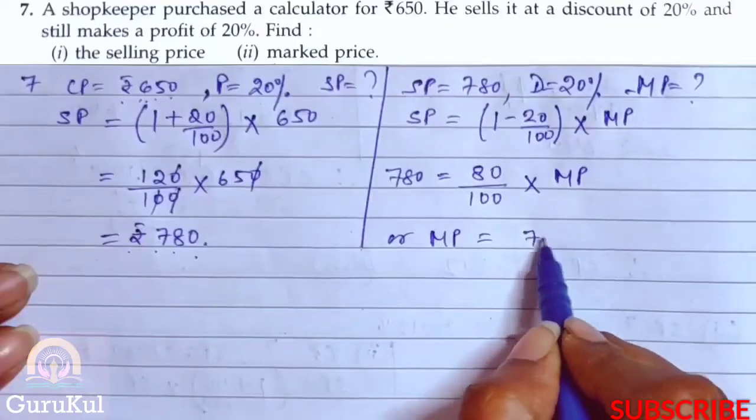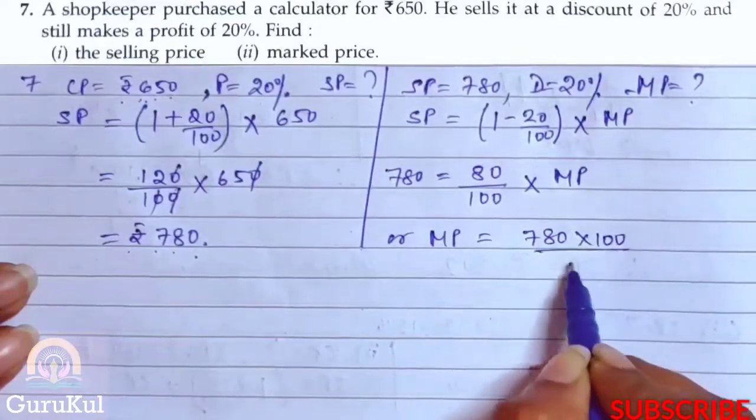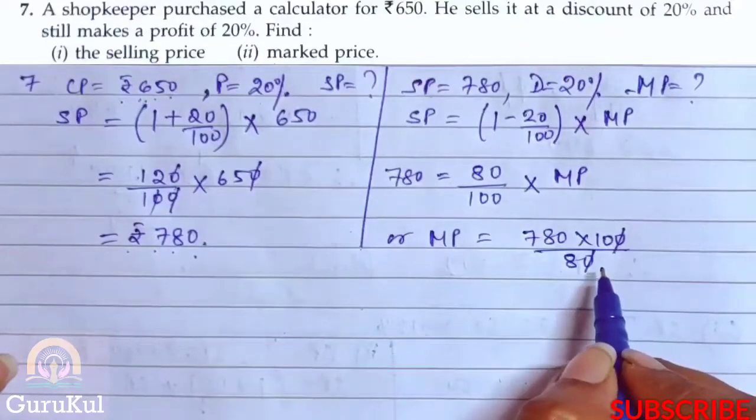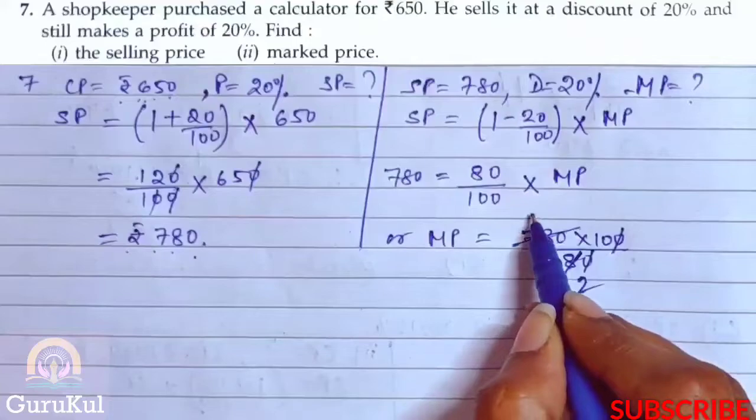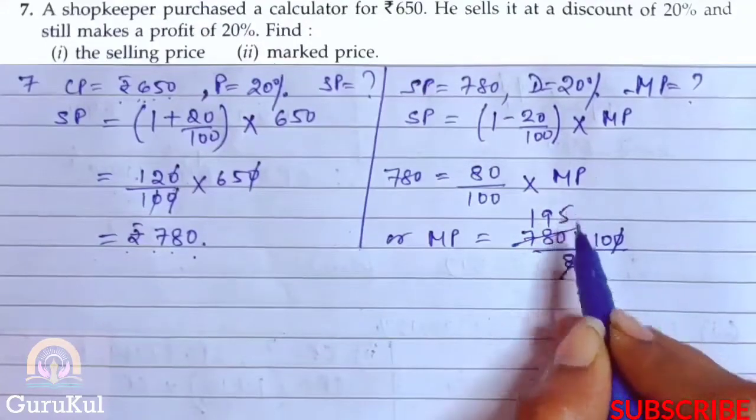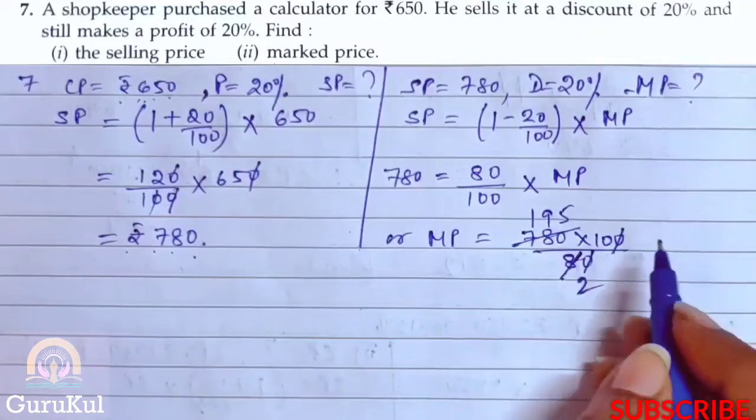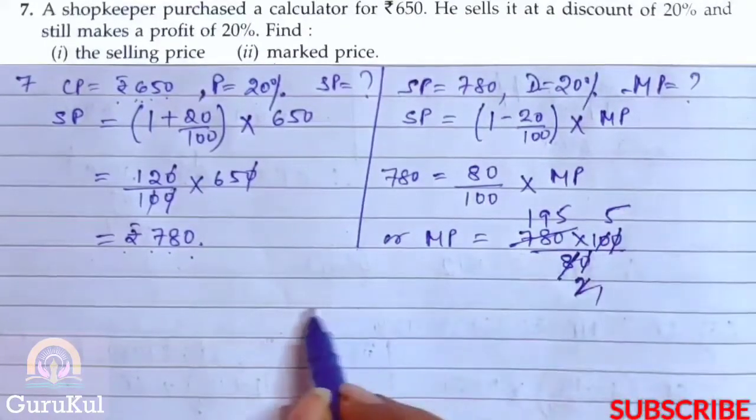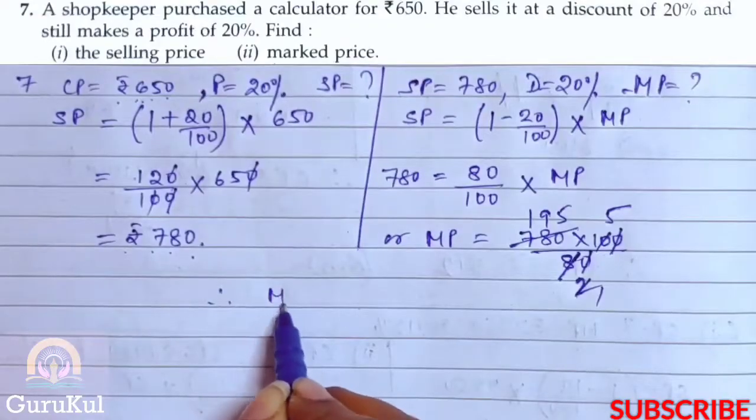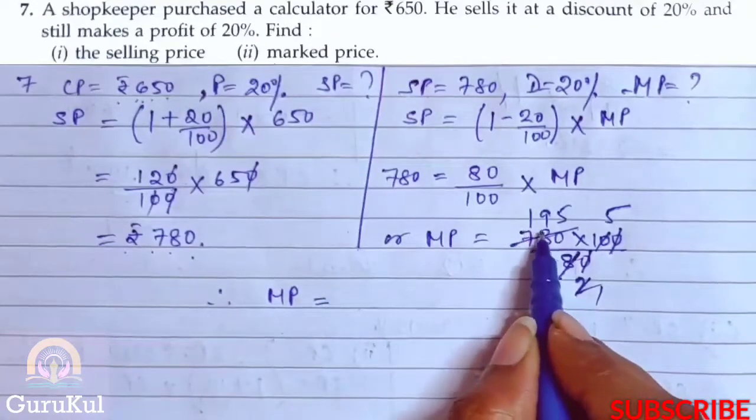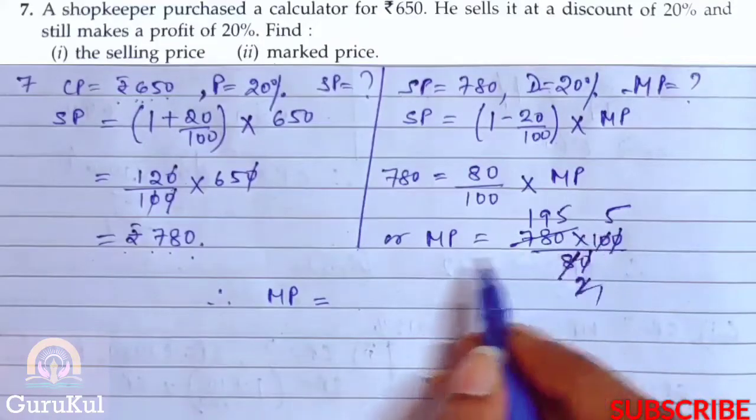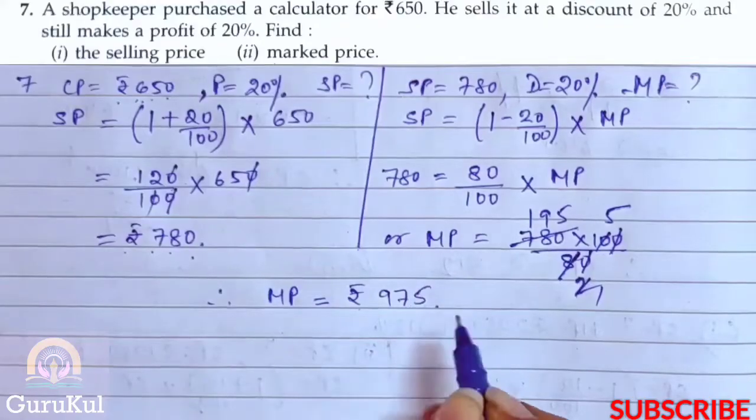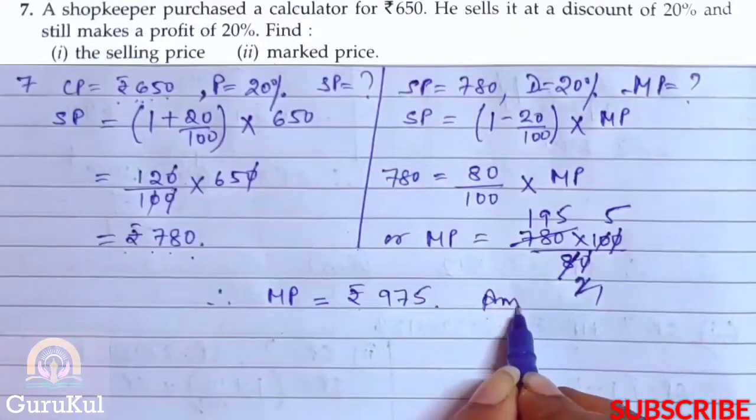Mark price equals, after cross multiplication, 780 into 100 by 80. 0 and 0 got cancelled. Therefore the mark price of the calculator will be 195 into 5, that gives us the amount of rupees 975. And this is the answer.